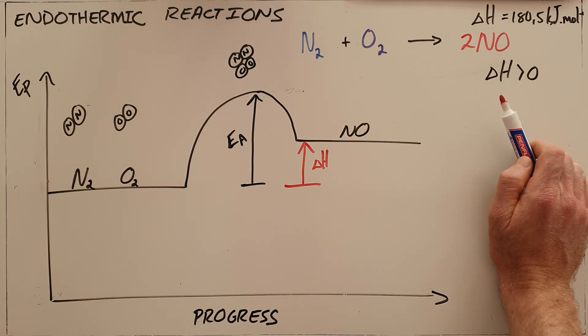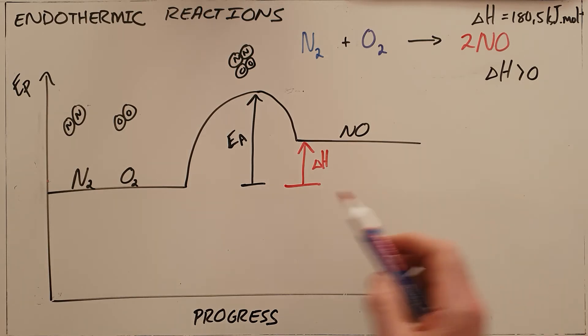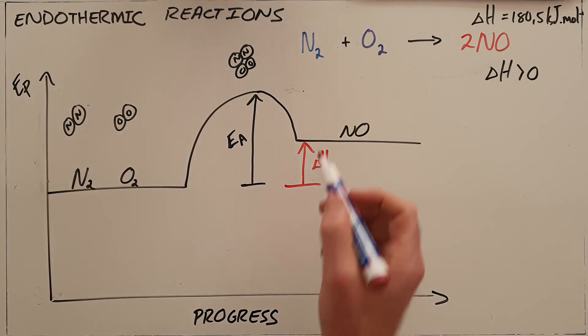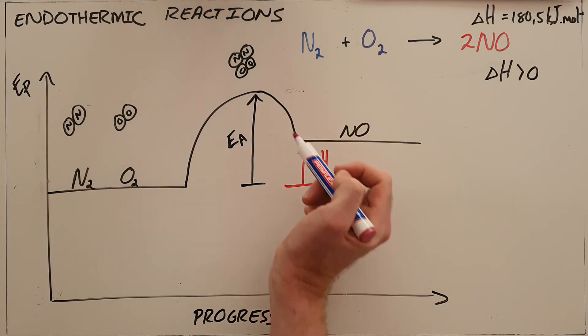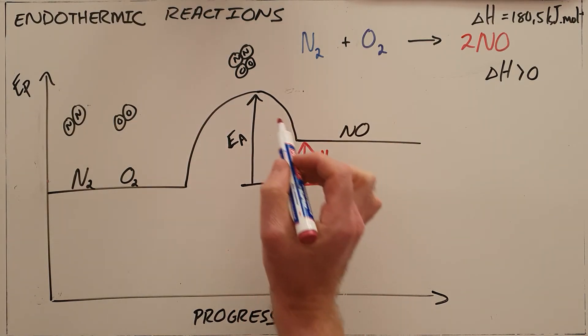We can also demonstrate the effect of a catalyst on this reaction. A catalyst is one of the few changes to a reaction that changes the rate without changing the number of total collisions.